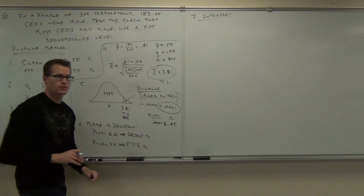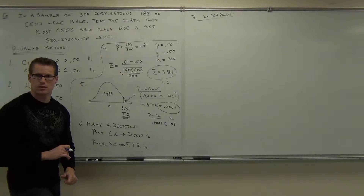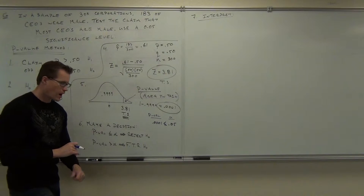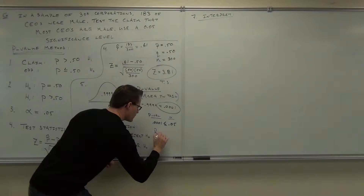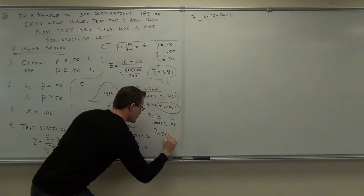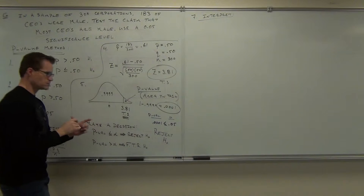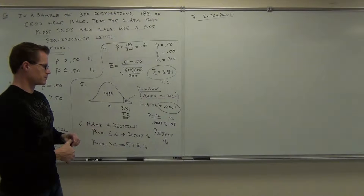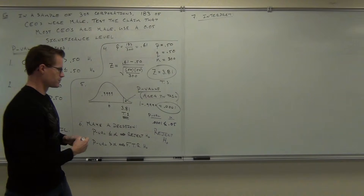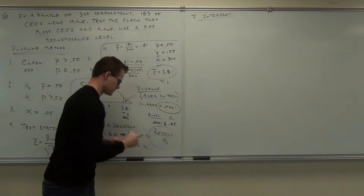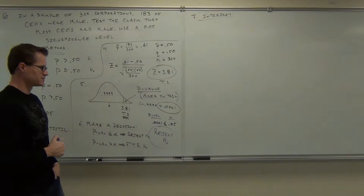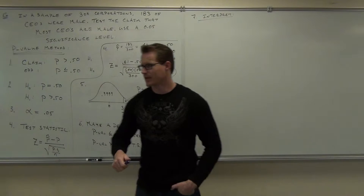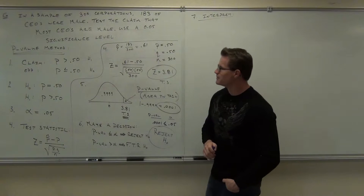What are we going to do here — reject or fail to reject? We're going to reject. Why? The P-value is less than alpha. Reject H sub 0.